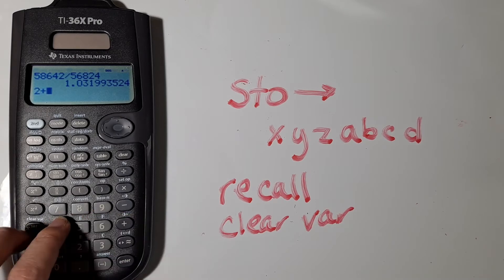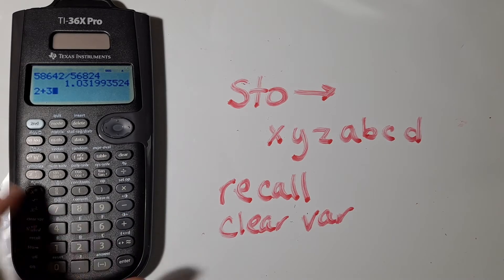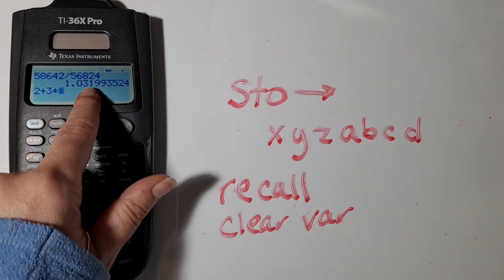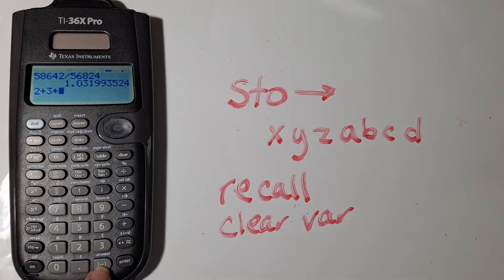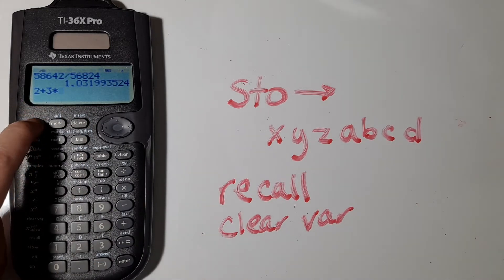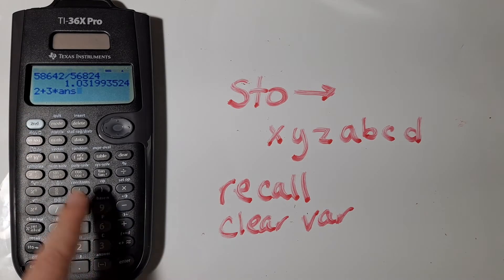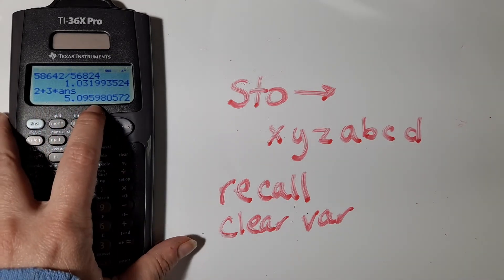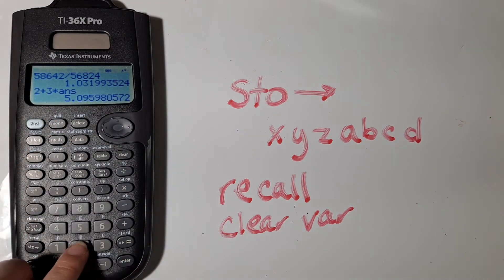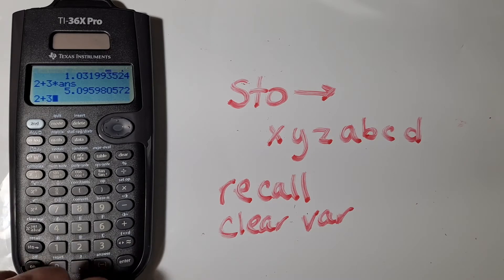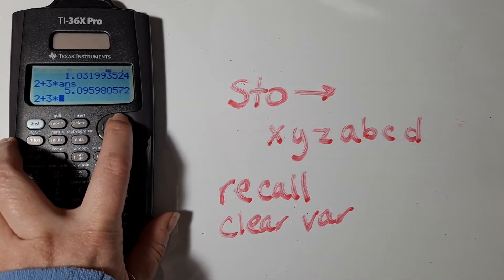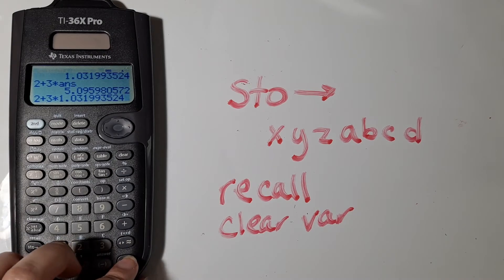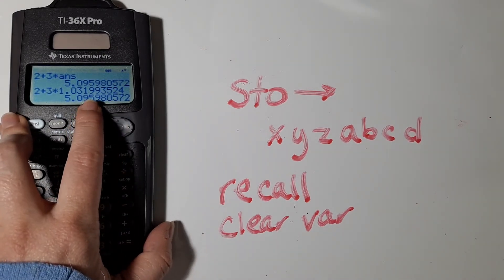I know that if you're doing other calculations, you can reference that previous answer by hitting second and then the minus sign down here to reference that previous answer. And you can also scroll up in your calculator and grab that previous answer and bring it back down. Those are two options for you.